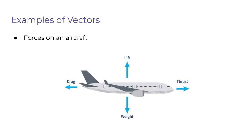Let's quickly go over a couple examples of vectors in the real world. The first obvious example is force. You know from physics that force is a vector. On an airplane, you have at least four different forces acting in 3D — you have lift, which brings the plane up, and you have weight, which brings the plane towards the earth.